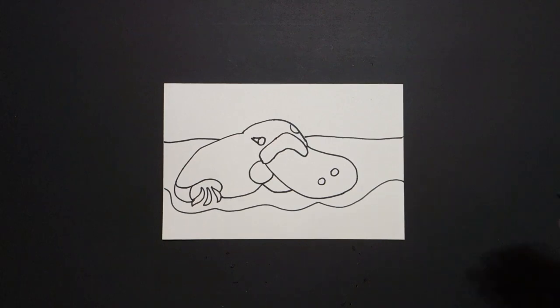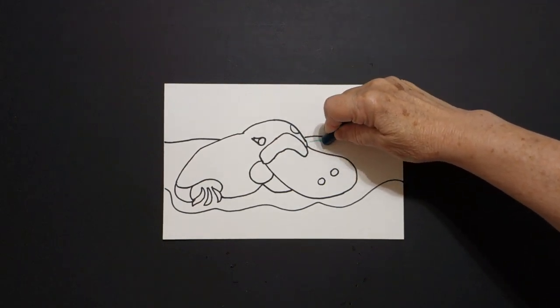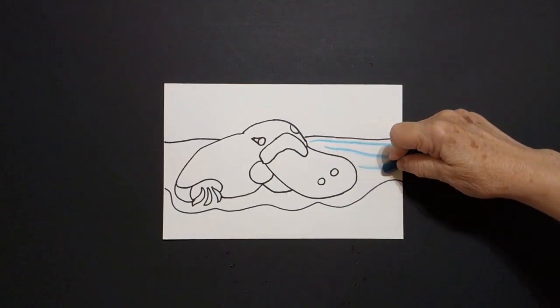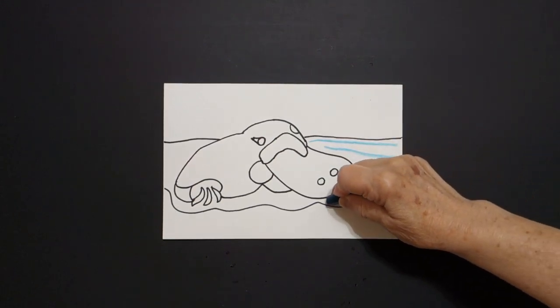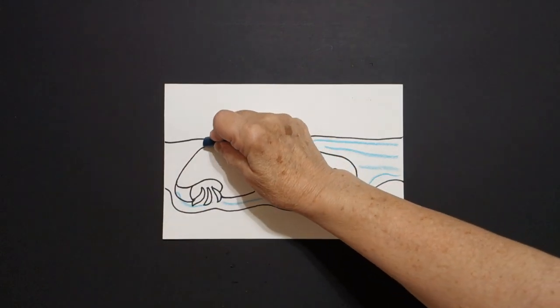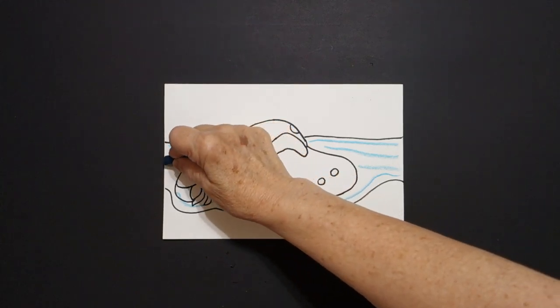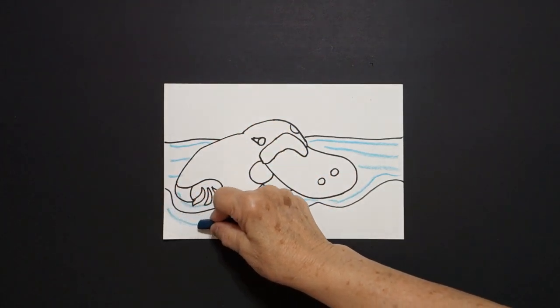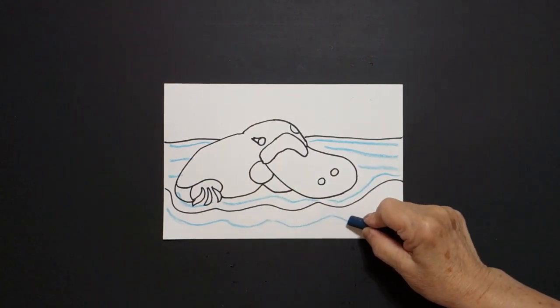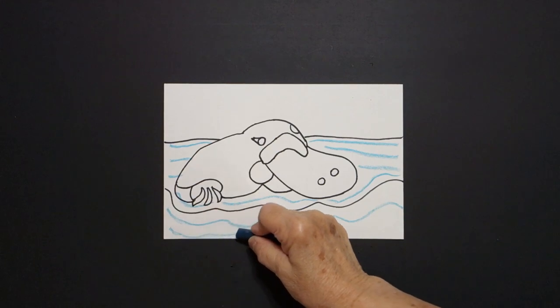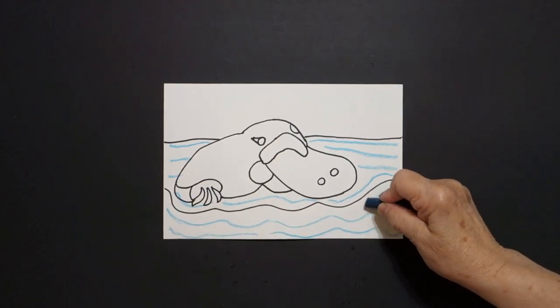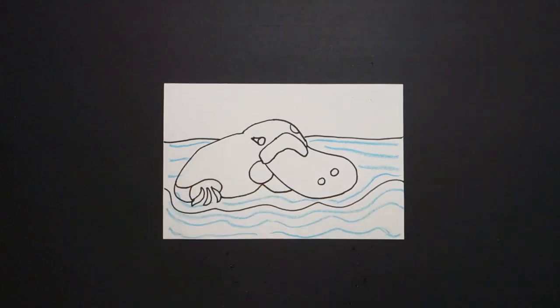Okay, platypuses live in the water. So the first thing I'm going to do is take my blue-green and I'm just going to draw some darker colored wavy lines, curved lines, wavy lines, all the way over. Because this is going to be my water. And they live in freshwater rivers and streams. So we're just going to draw more wavy lines, just a little bit darker than normally.